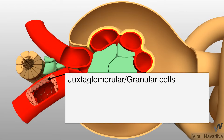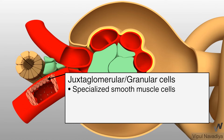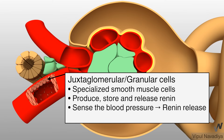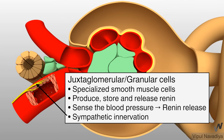Now, the juxtaglomerular cells. They are specialized smooth muscle cells of the afferent arteriole. You can see typical smooth muscle cells nearby. Juxtaglomerular cells produce, store, and release renin. They contain a large amount of renin-secreting granules, because of which they are also called granular cells. They sense the blood pressure in the arteriole and accordingly modify renin release. They also receive sympathetic innervation.